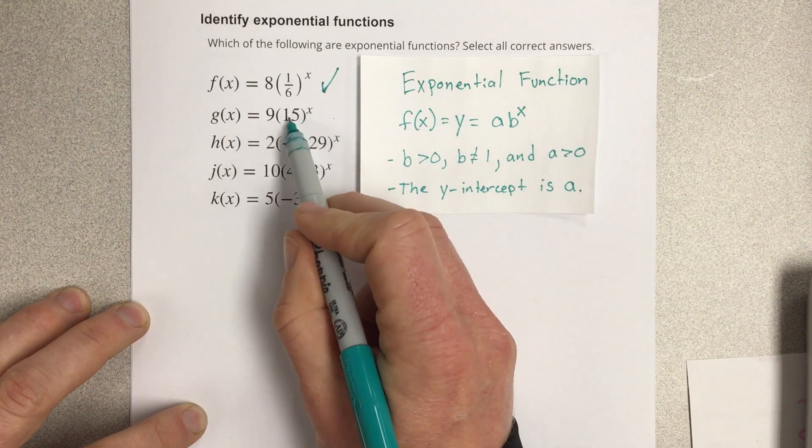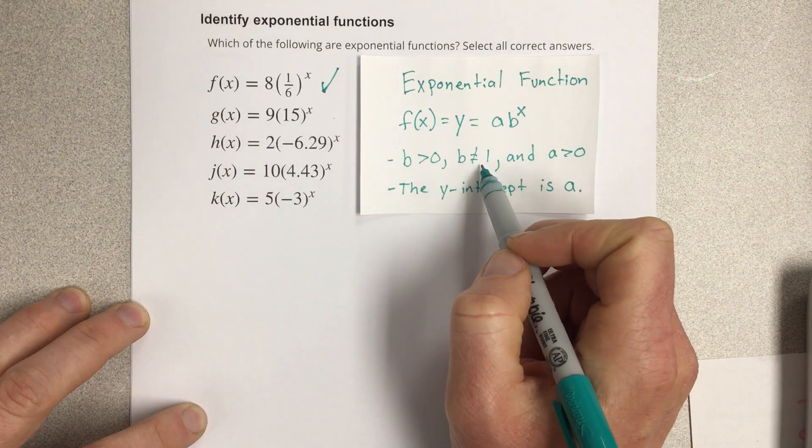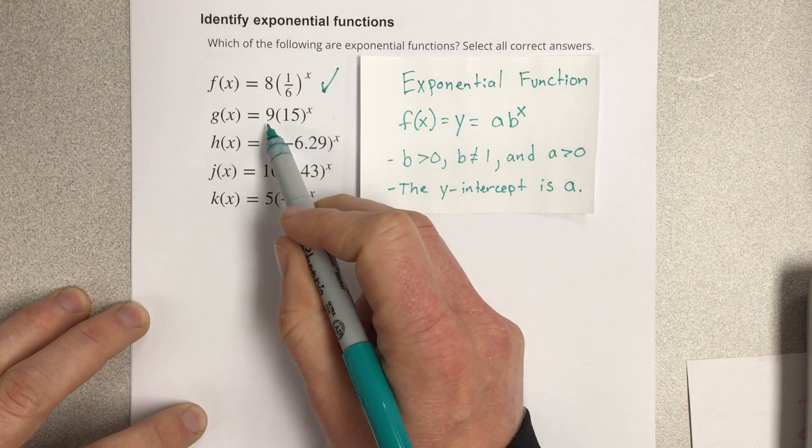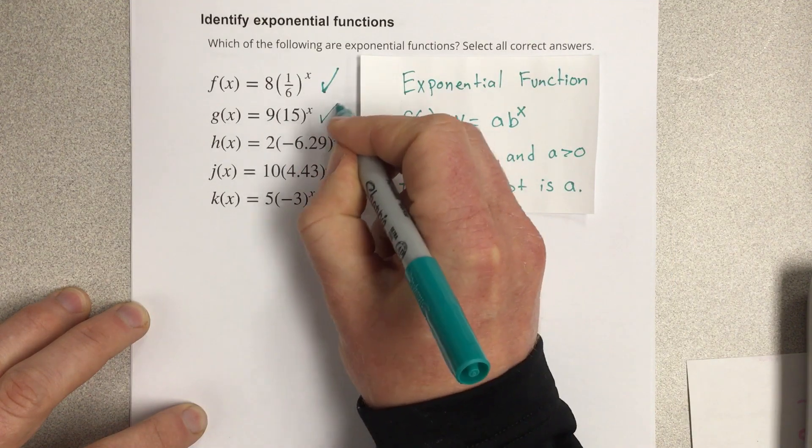g of x, 15 is greater than zero, it's not equal to one, so we're good there. And then nine is greater than zero, this is an exponential.